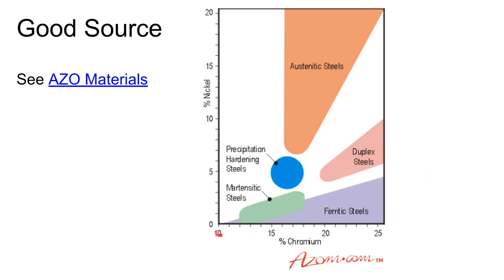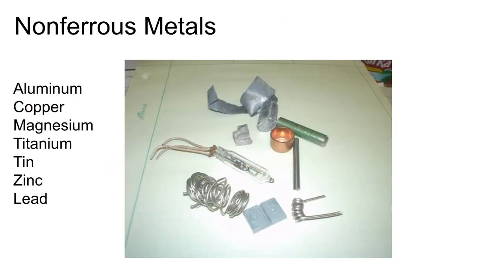Everything on the stainless steel diagram has greater than 11% chromium. The other axis is nickel content. As you add nickel it stabilizes the austenite, which is what allows that structure to exist at room temperature. There is overlap between martensitic and ferritic steels — the distinction between those two is most visible in the amount of carbon added, though there's no carbon axis on this diagram. We'll come back to ferrous metals more when we discuss the iron-carbon system.